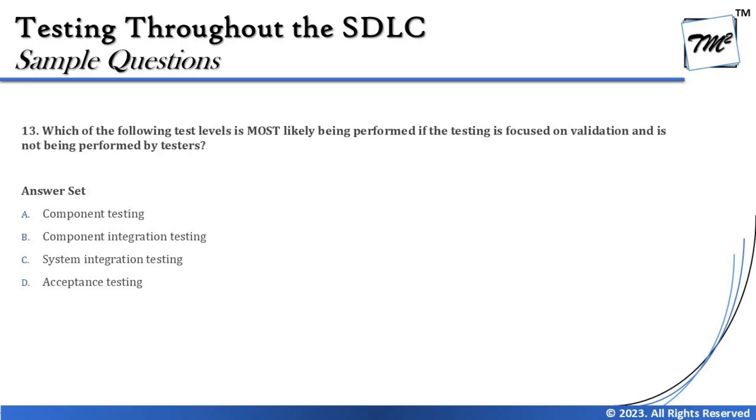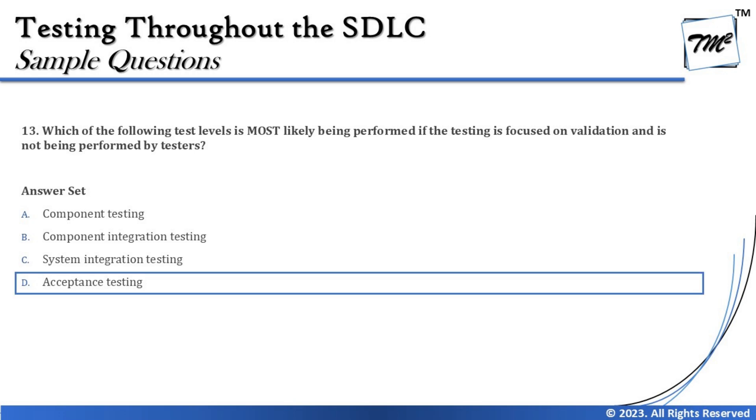Even if you don't read the options, you can already conclude the right answer. The options are: A — component testing, B — component integration testing, C — system integration testing, and D — acceptance testing. Without wasting much time, the right answer is D — acceptance testing — because that's the only level focused on validation, it's dynamic testing, and it is not performed by the testers; it is performed by the business or customer representative.